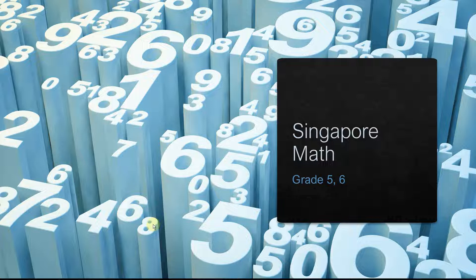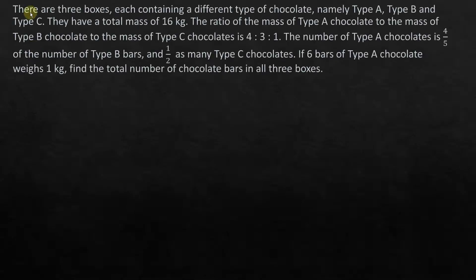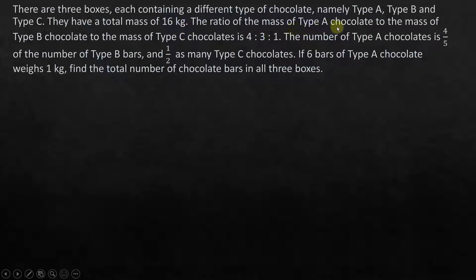Hi everyone, good morning! Hope you're fine and ready to challenge Singapore math. Let's go straight to the problem. There are three boxes, each containing a different type of chocolate — namely type A, type B, and type C. They have a total mass of 16 kilograms. The ratio of the mass of type A chocolate to type B chocolate to type C chocolate is 4:3:1.